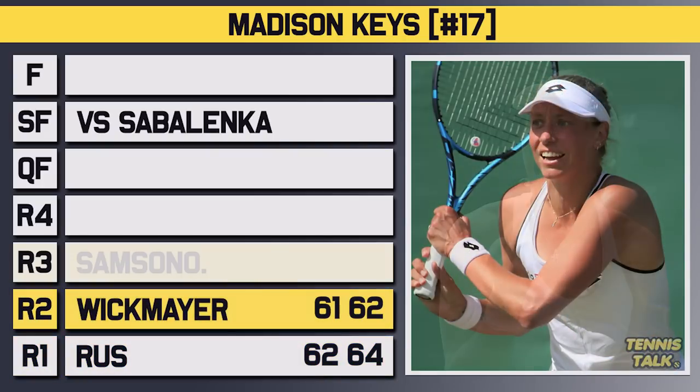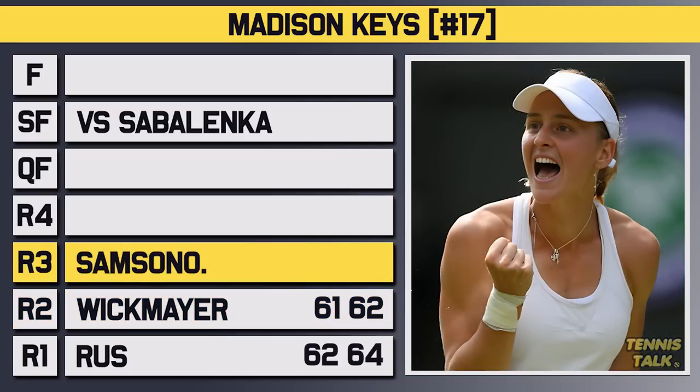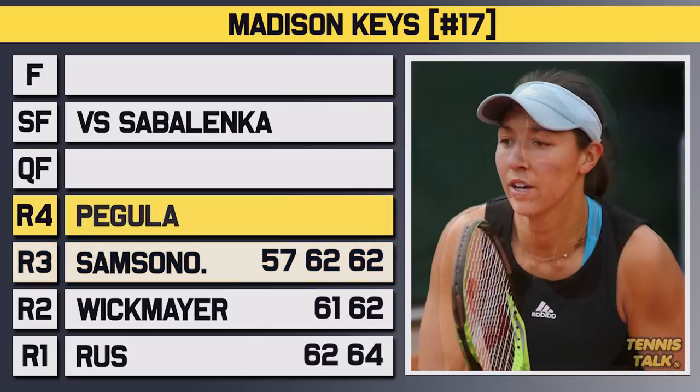In the third round, she'd take on the 14th seed Samsonova, who'd been having a very good season on the hard courts. But after losing the first set, it was all Keys, getting through 5-7, 6-2, 6-2. In the fourth round, she'd take on the number 3 seed Pegula, who she'd lost to in their only meeting. But this time it was all Keys, demolishing Pegula in straights 6-1, 6-3 to advance to another quarterfinal at the US Open.